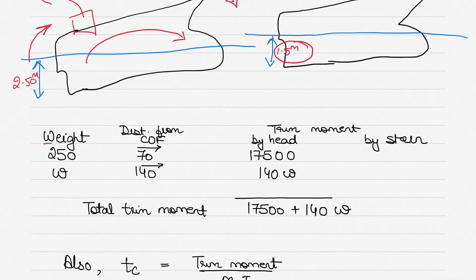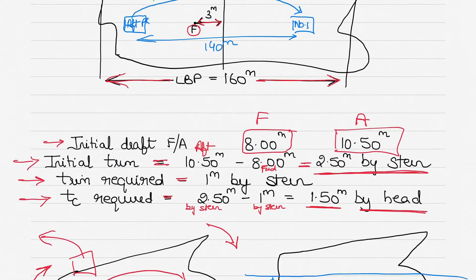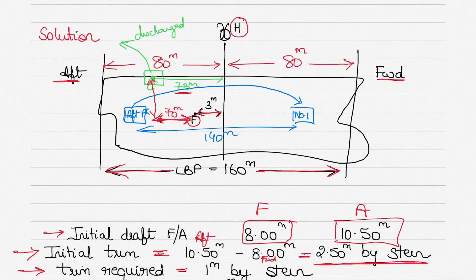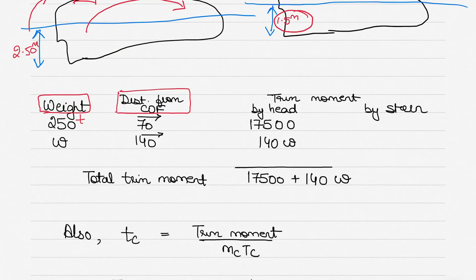The deck cargo to be discharged is 250 tons. Its effect on trim is determined by its distance from the center of flotation. The cargo is 73 meters from midship, and the center of flotation is 3 meters aft of midship, so the distance from center of flotation to cargo is 73 minus 3 equals 70 meters. Since the cargo is discharged from aft and the center of flotation is forward of the cargo, the trimming moment is by head.